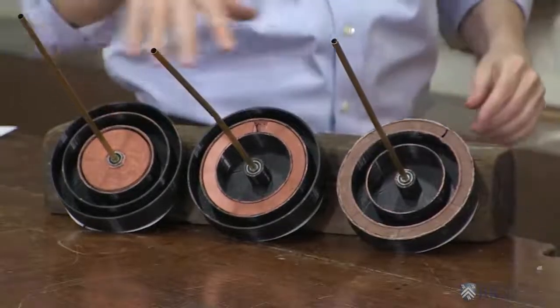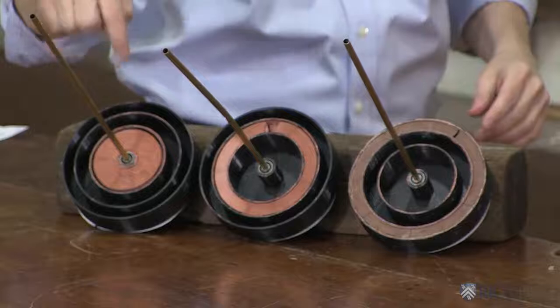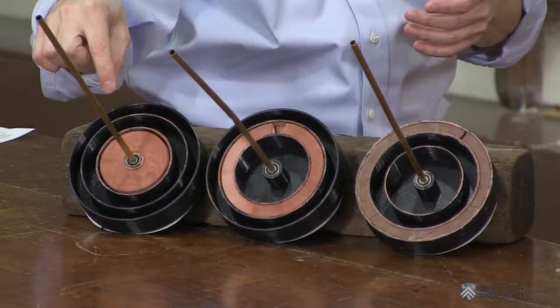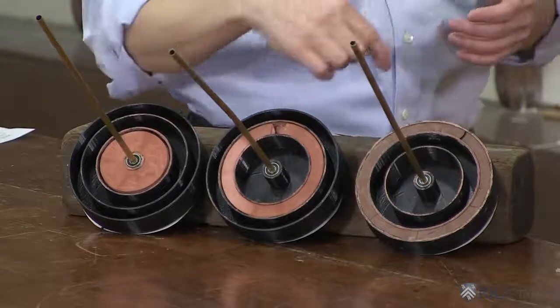So you can see this would be the, even though they all have the same mass, this is the smallest moment because the mass is close to the axis, the smallest radii for most of the mass elements. And then medium and then highest moment.